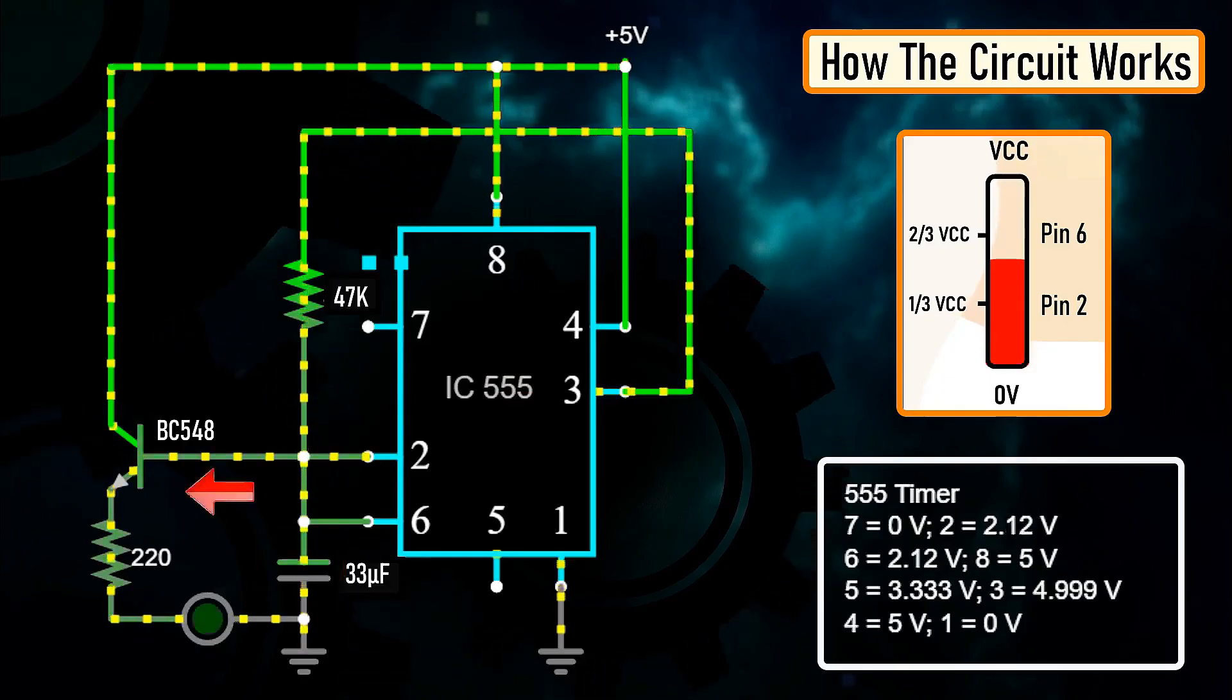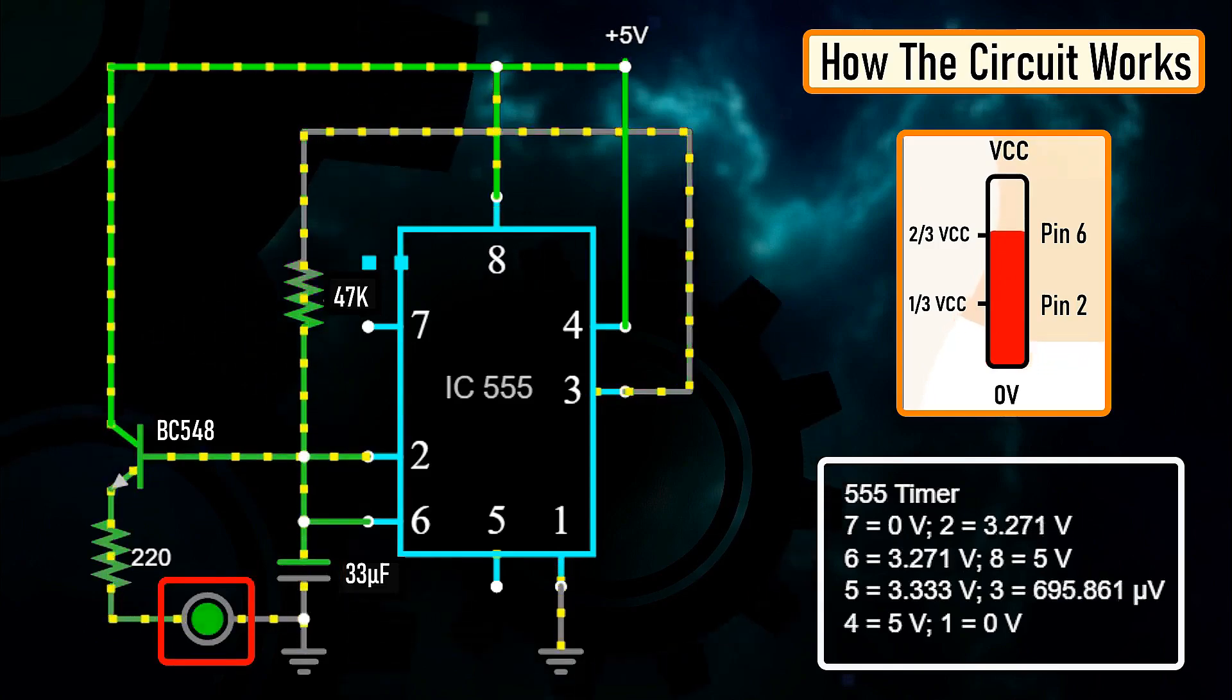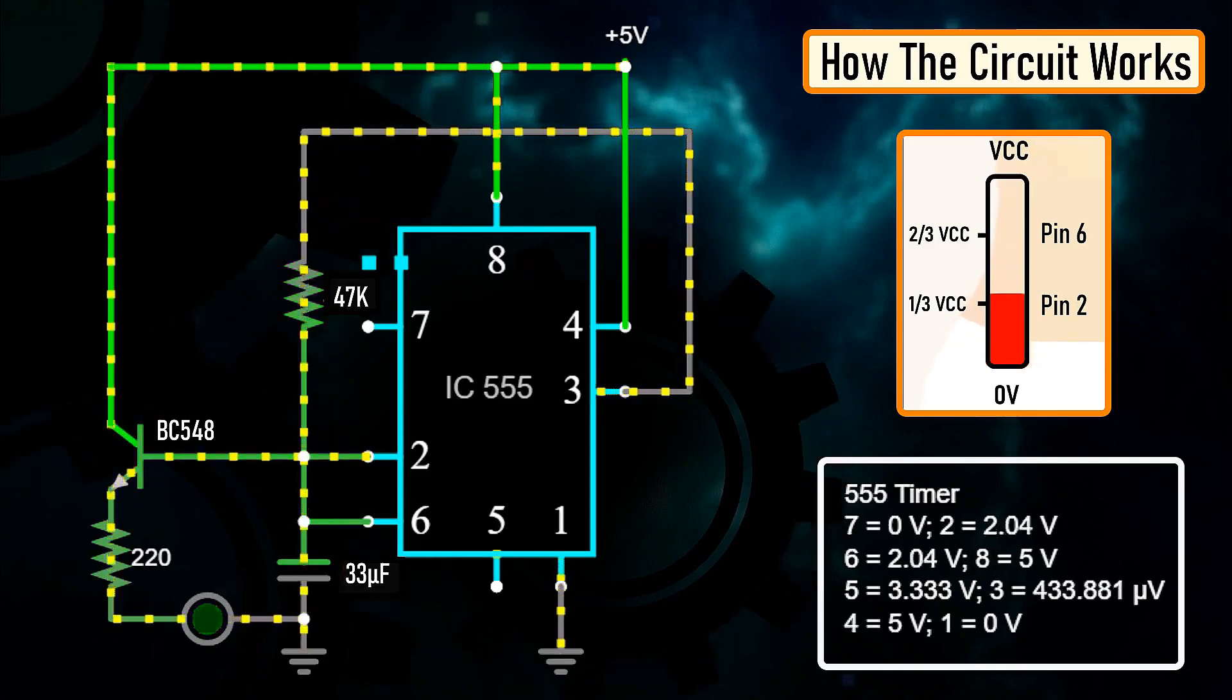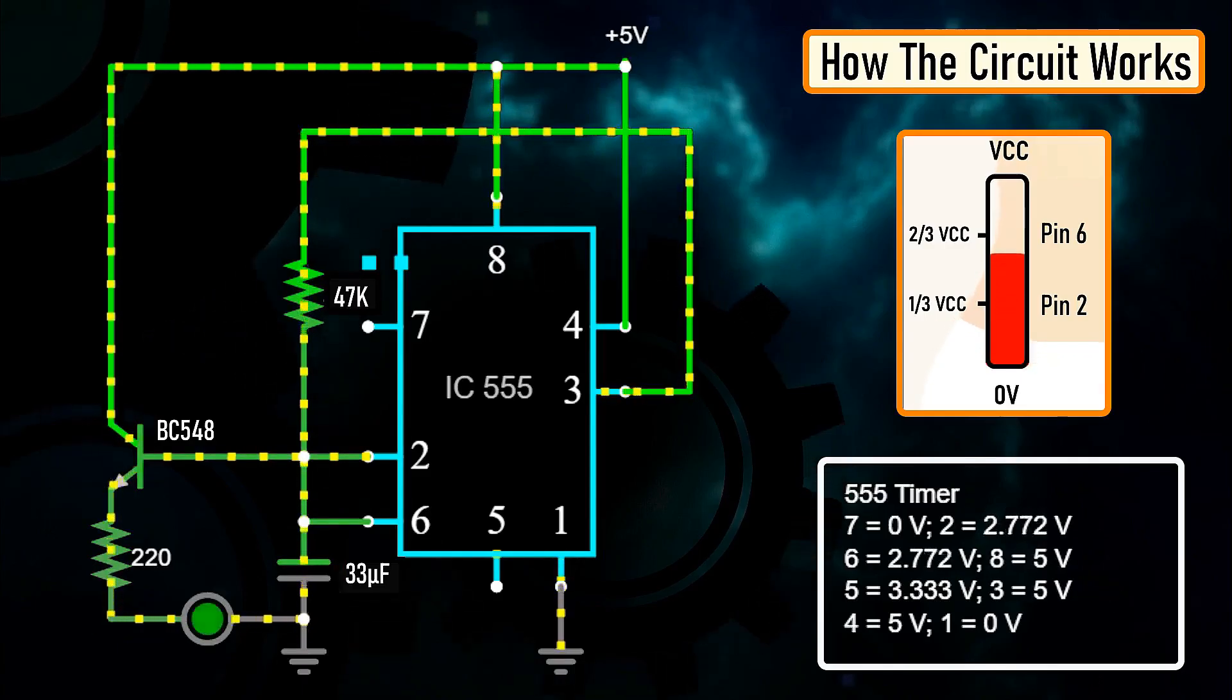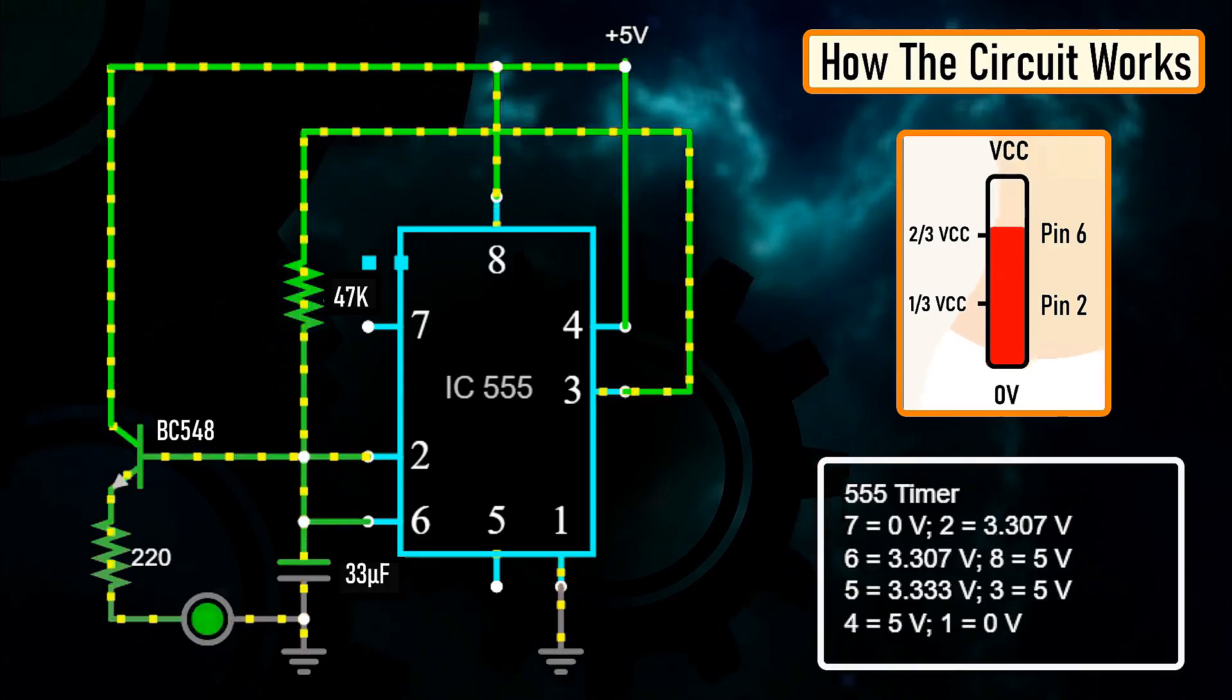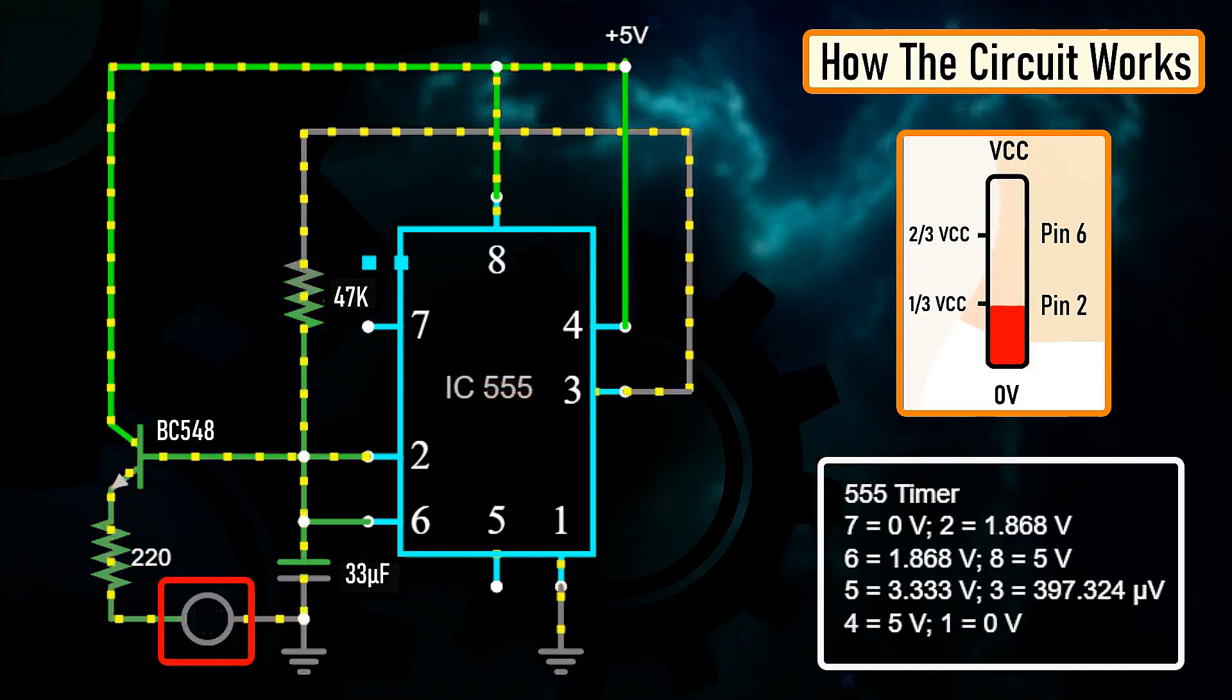At the same time, the base current of the transistor will also increase causing the LED to slowly fade in. Once the voltage across the capacitor crosses two-third of the supply voltage, pin number 6 turns off the output. This causes the capacitor to slowly discharge causing the base current to fall and hence the LED starts fading out.